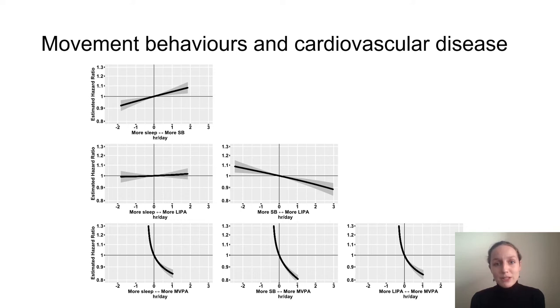One of the things about movement behaviours is you can't just spend more time in one behaviour. If I spend more time doing moderate to vigorous physical activity I have to spend less time doing some or all of the other behaviours. We were very interested in accounting for this in our analysis and looking at reallocating time between different behaviours and that's what the graphs on this slide are showing, reallocating time between different pairs of behaviours.